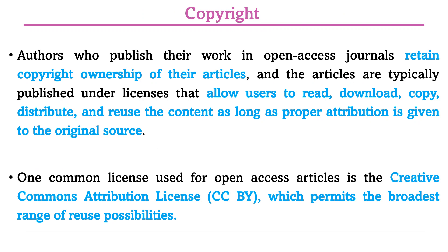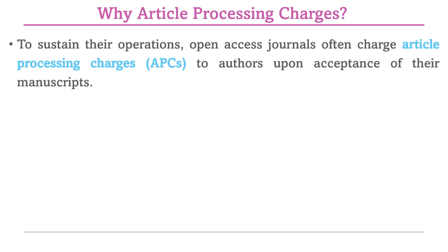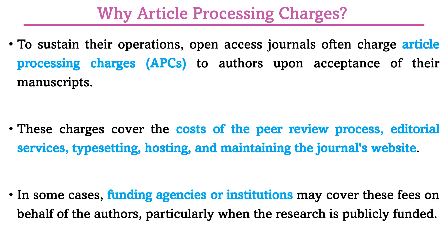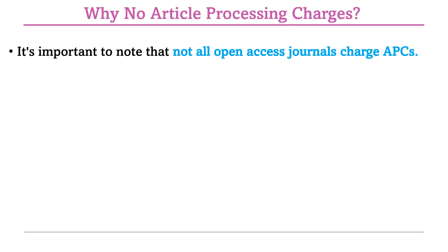To sustain their operations, open access journals charge an article processing charge (APC) from authors upon acceptance. These charges cover the cost of the peer review process, editorial processes, typesetting, hosting, and maintenance of the journal website, which requires IT services and manpower. In some cases, funding agencies or institutions and universities cover these APC fees on behalf of authors.